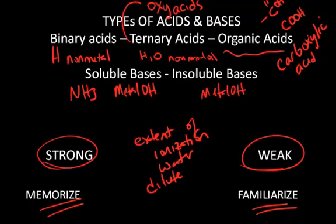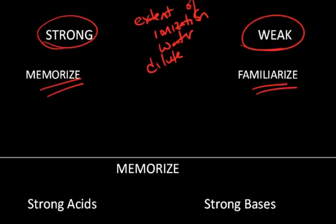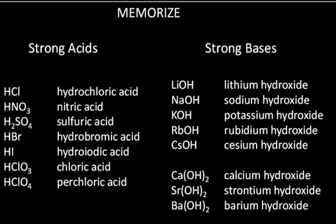The weak bases are the derivatives of ammonia and the insoluble bases, whereas the weak acids can be binary or ternary and the organic acids. So the short list that you need to memorize are the strong acids and the strong bases.